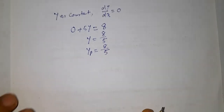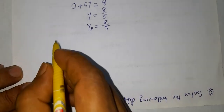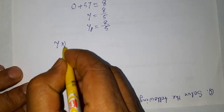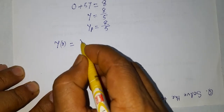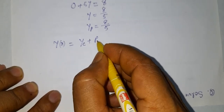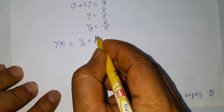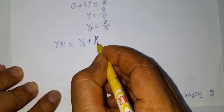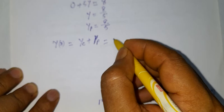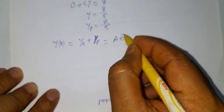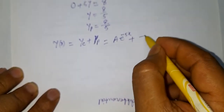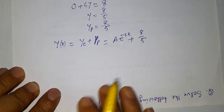The complete solution y is equal to the complementary solution plus the particular solution. So y equals A times e to the power minus 5x plus 8/5.